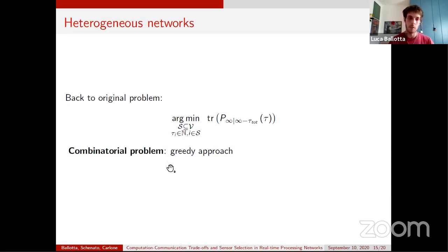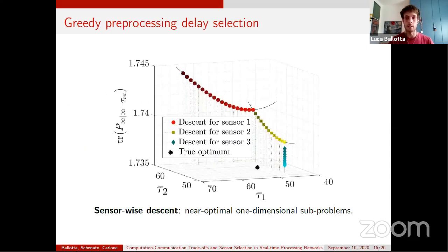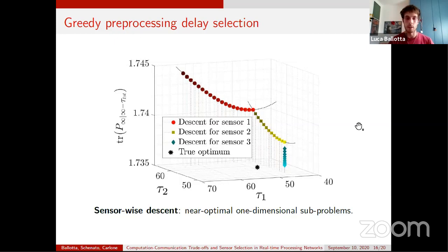The problem is tackled with a greedy approach. The general idea is to build the selected set by adding one sensor at a time in a greedy fashion, and for each candidate subset we optimize the pre-processing delays by minimizing the cost function one delay at a time.